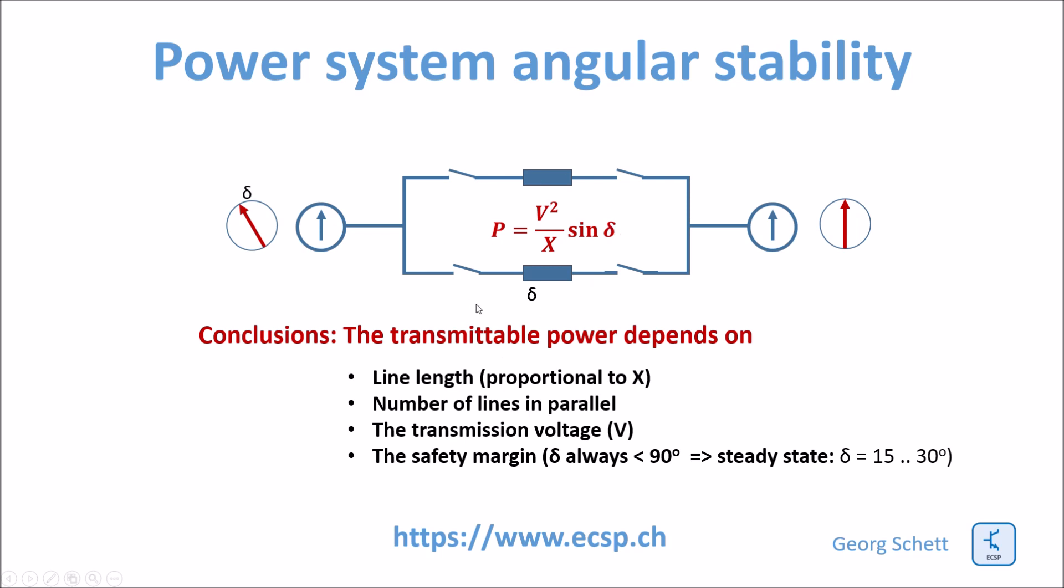the maximum power you can transmit is proportional to the impedance. In this case, you have two lines in parallel between system A, the generator, and the load system B. The second thing is that this equation also is related to the number of lines in parallel.